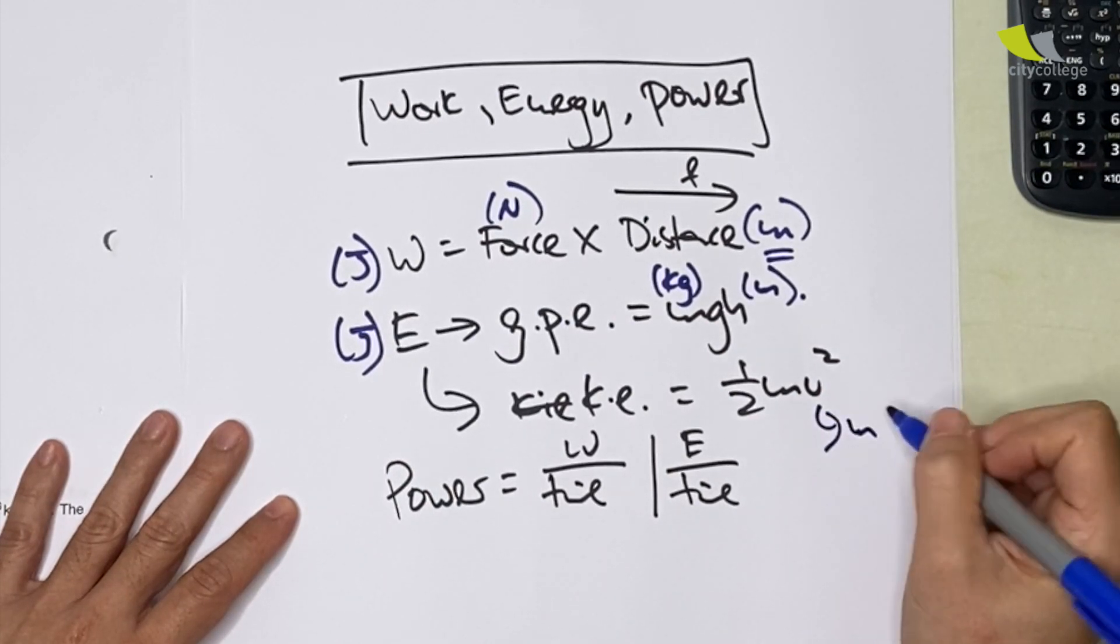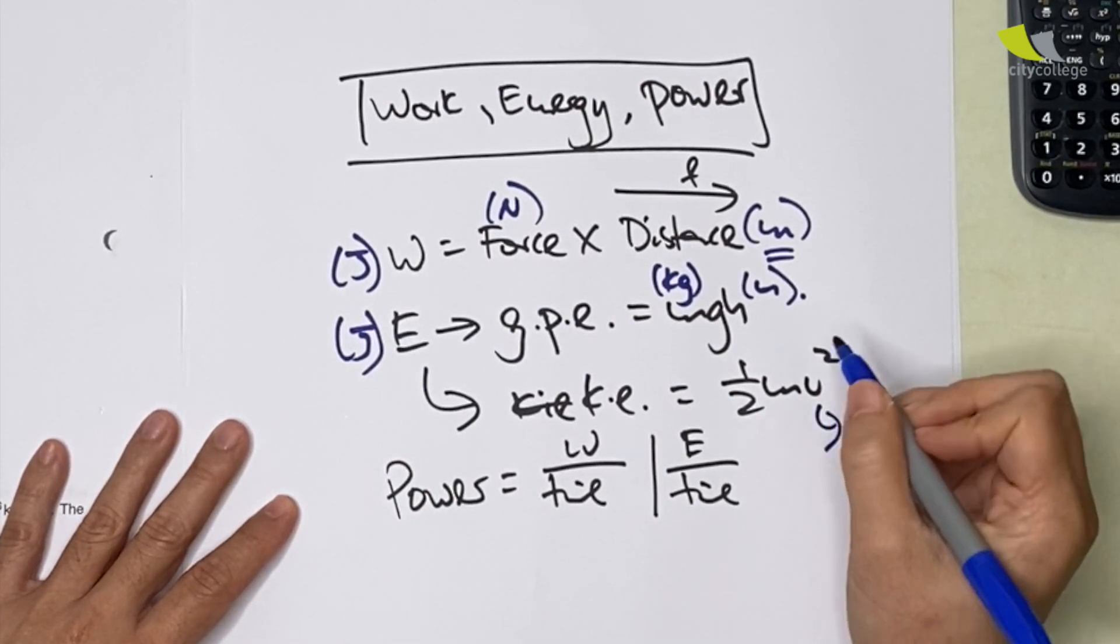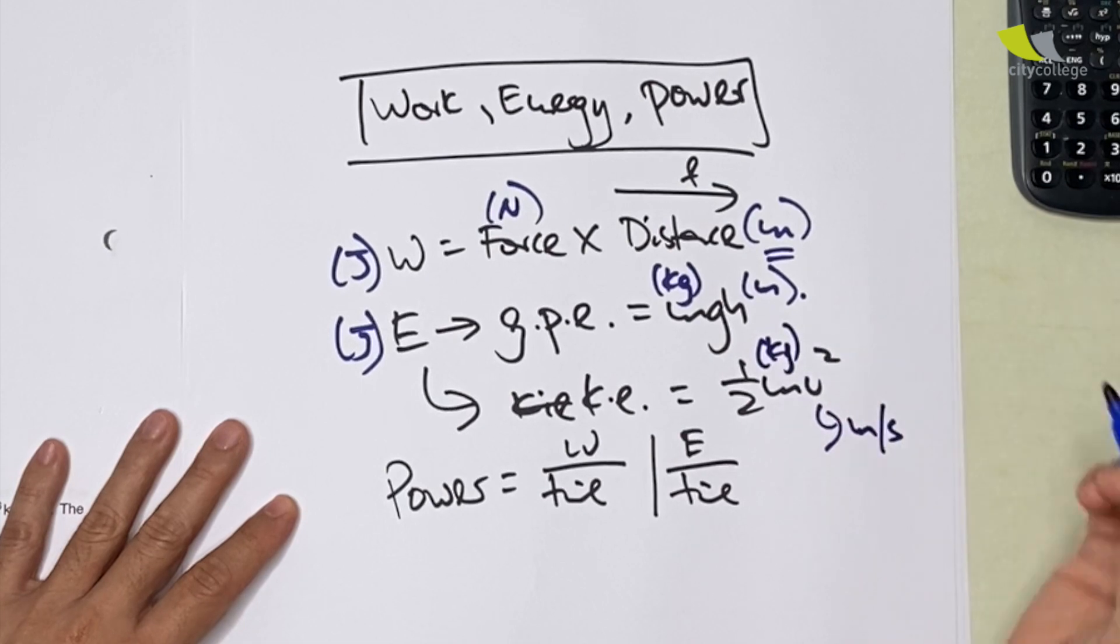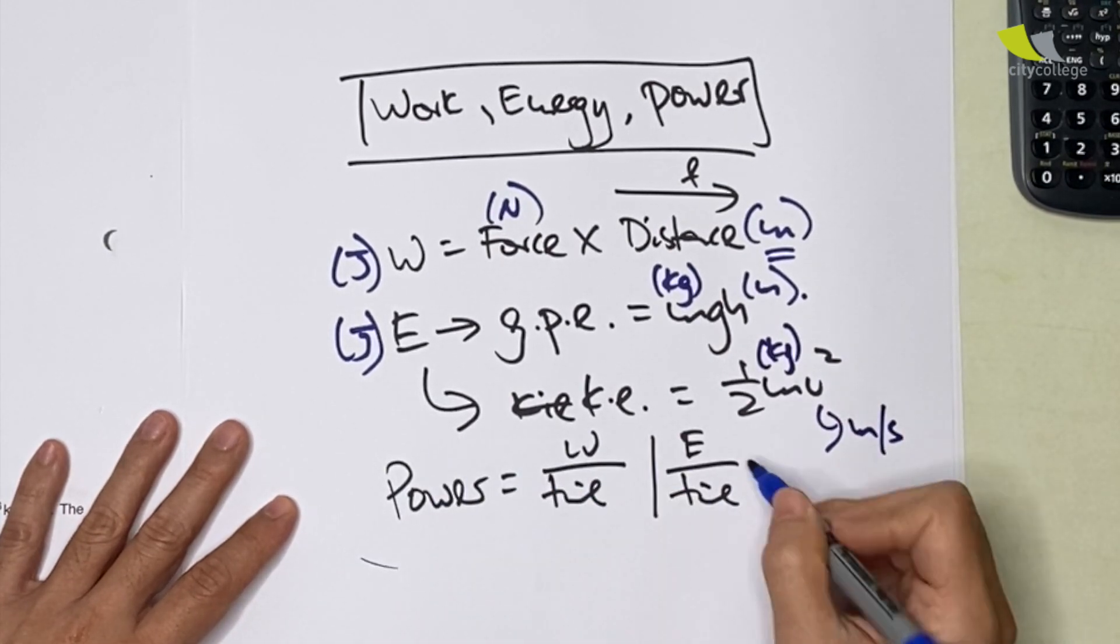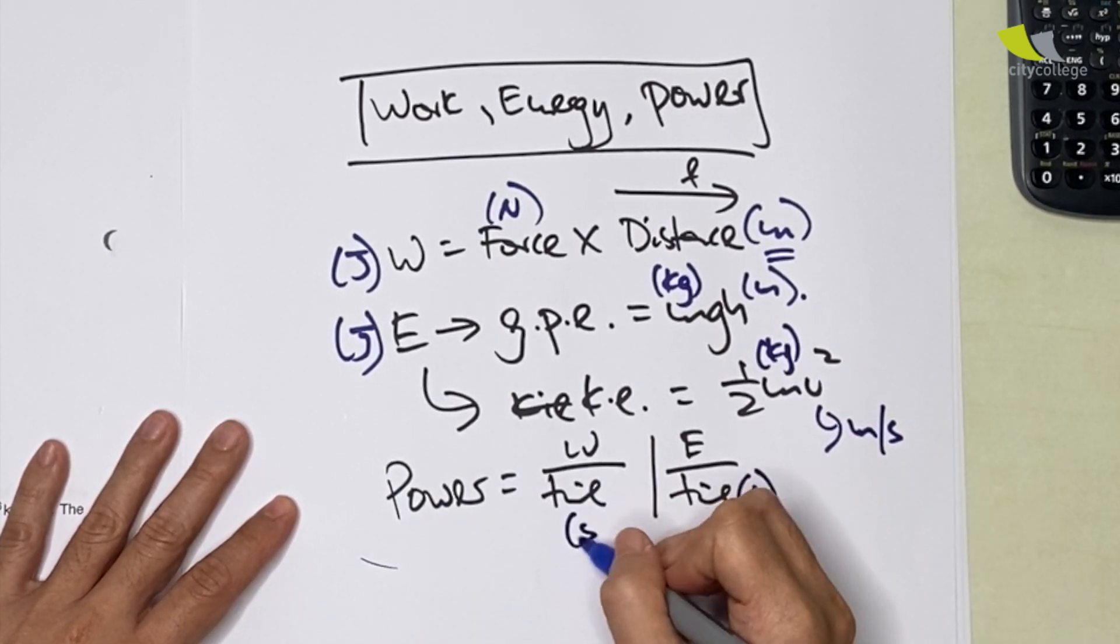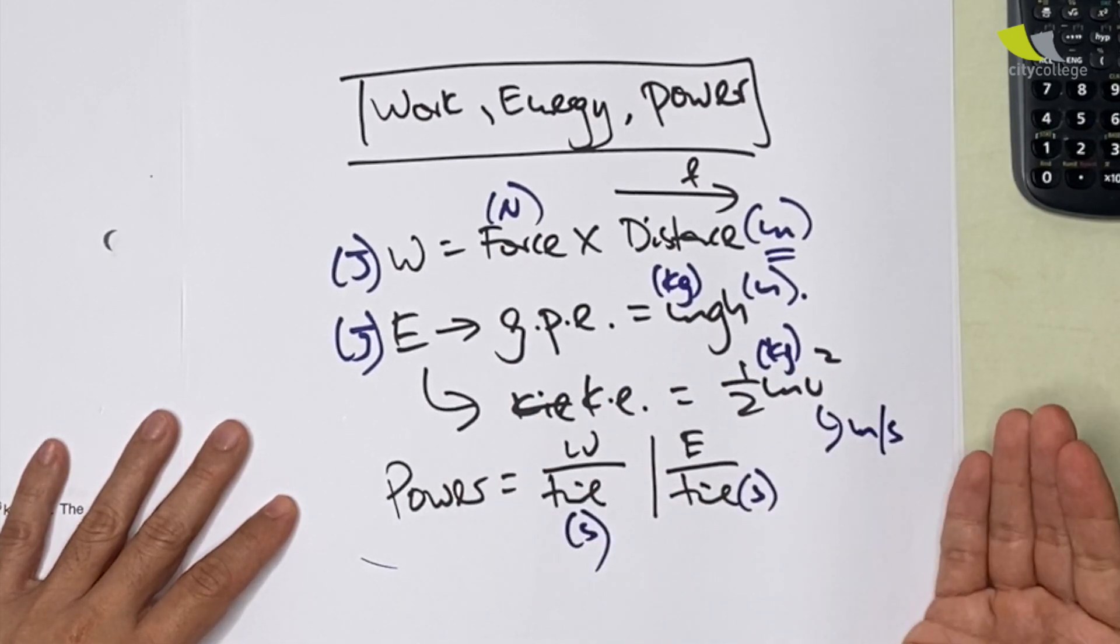Power: joules, velocity needs to be meter per second, mass needs to be in kilograms. Time needs to be in seconds. So if they give it to you in minutes or hours, you need to convert. So mainly it's about this.